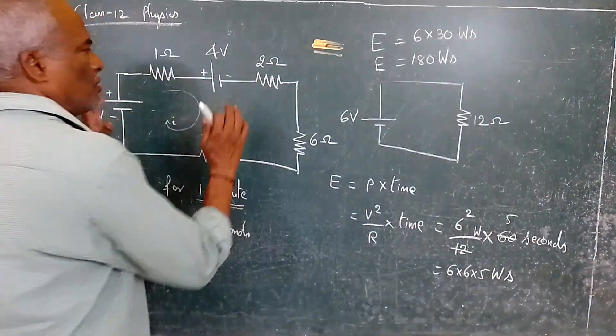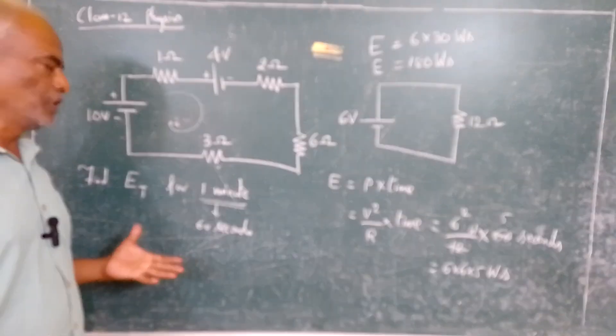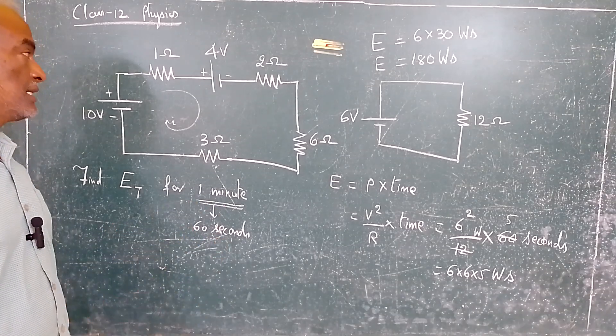So in this circuit we have to find the total energy for 1 minute duration. So 1 minute is 60 seconds.